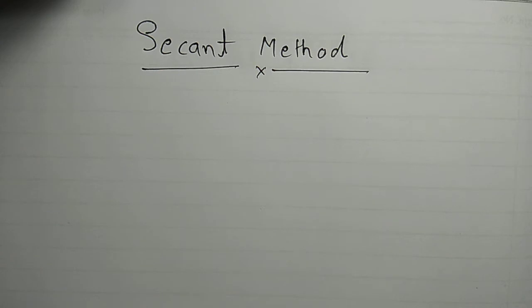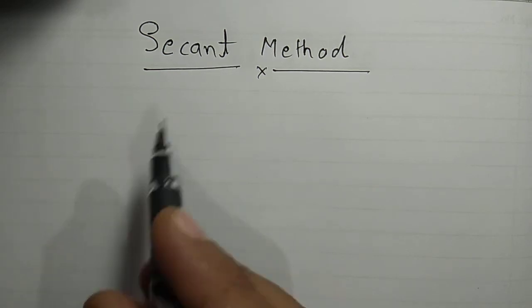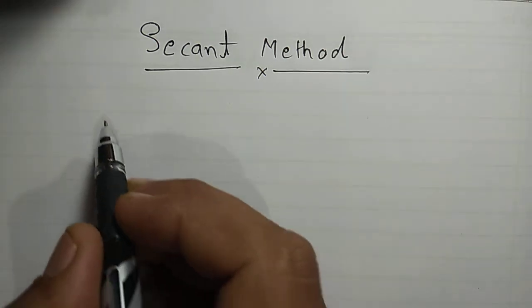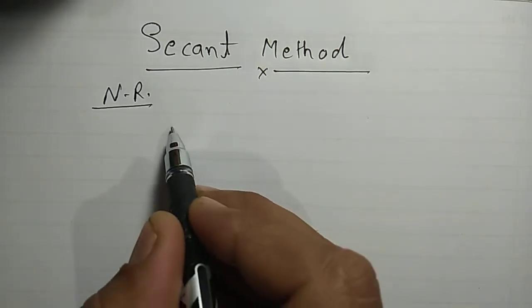Before this, we have seen the Newton-Raphson method to find the root of an equation — the link to that video is given in the description. Now let us first see what the formula for the Secant Method is, and we will try to derive it using the Newton-Raphson method.